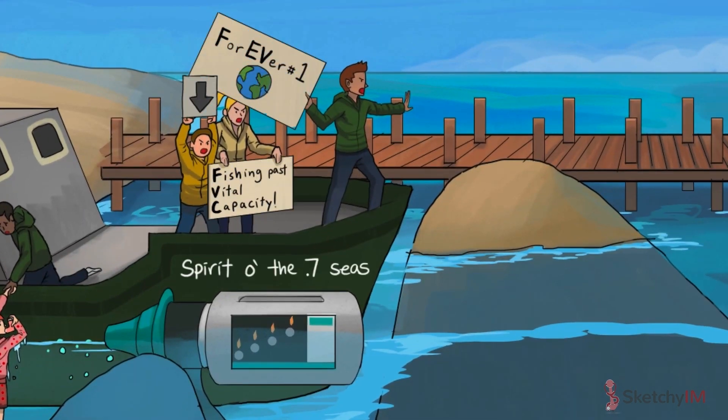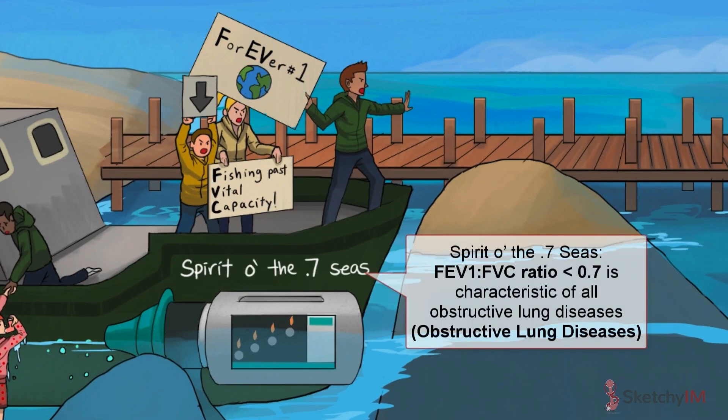On spirometry, patients will also have an FEV1 to FVC ratio less than 0.7, a characteristic finding seen in all obstructive lung diseases — hence the name 'Spirido the 0.7 Seas' emblazoned on this obstructive boat. Kind of a small view for a group of earth lovers, just saying.